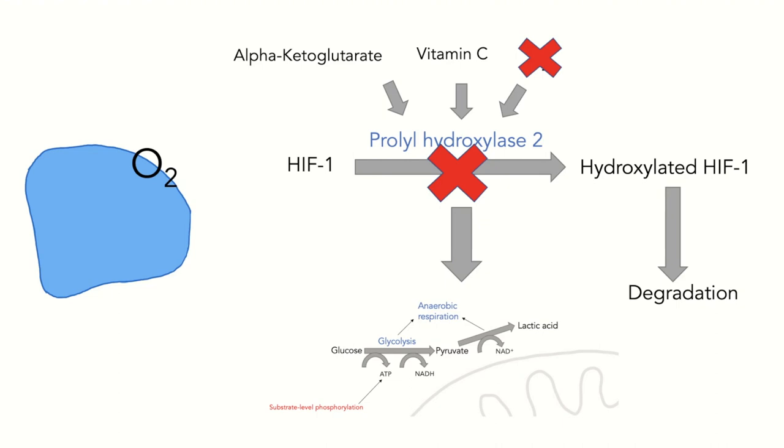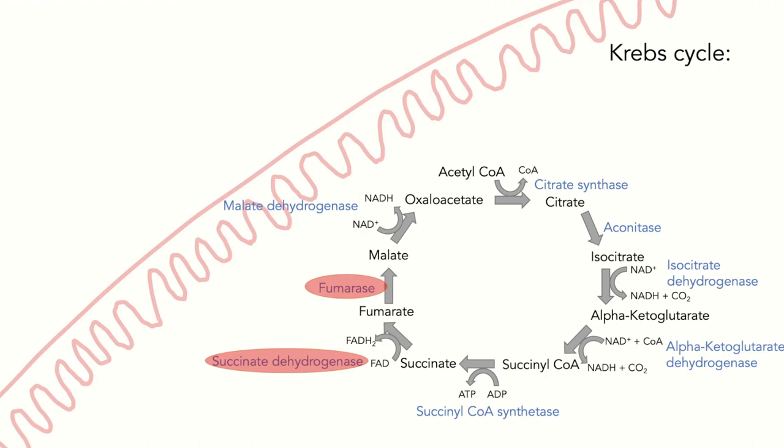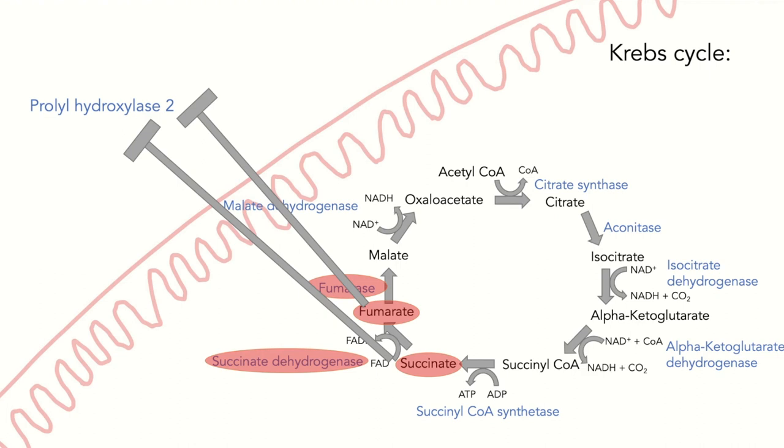In cancer cells however, where succinate dehydrogenase or fumarase of the Krebs cycle are defective, succinate and fumarate accumulate in the mitochondria, causing them to spill into the cytoplasm, where they act as competitive inhibitors of the prolyl hydroxylase 2, preventing the degradation of HIF1, hence also increasing the rate of glycolysis.